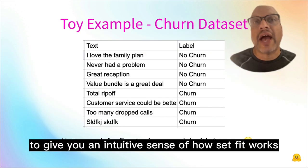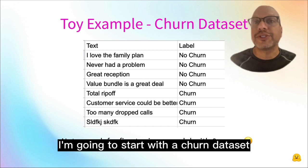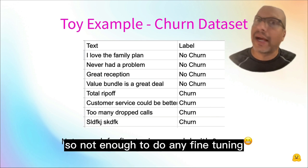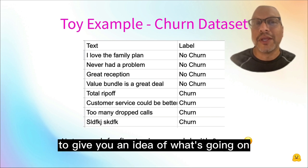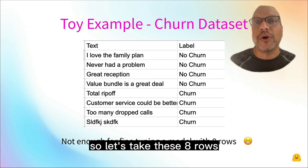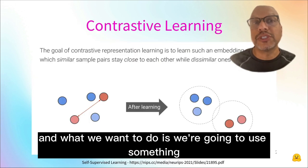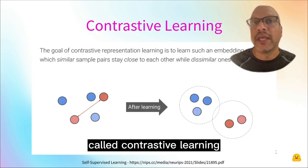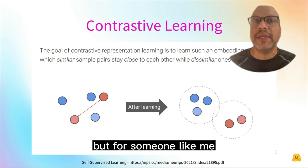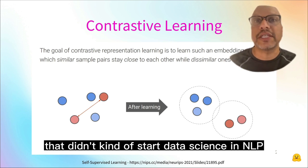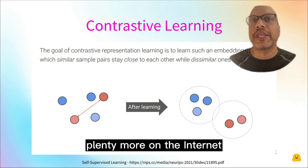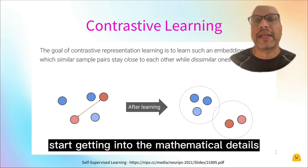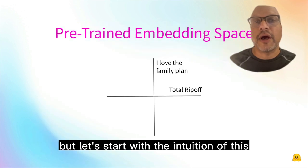To give you an intuitive sense of how SetFit works, I'm going to start with a churn dataset with just eight rows — not enough to do any fine-tuning, but enough to give you an idea of what's going on. What we're going to use is something called contrastive learning. This is widely used in NLP, but it was a new concept for me. I want to give you the intuitive understanding here in the next few slides.